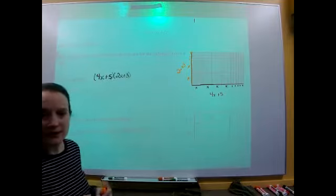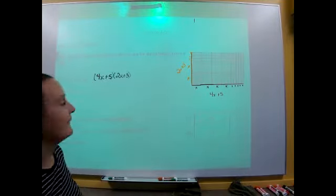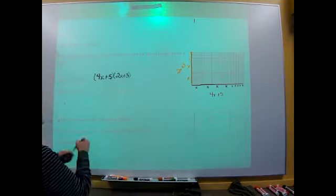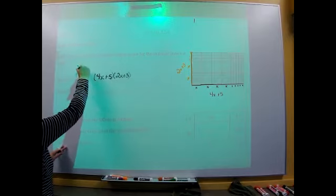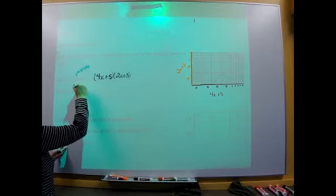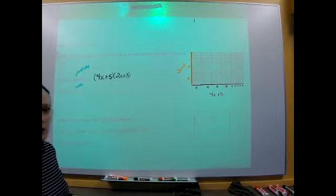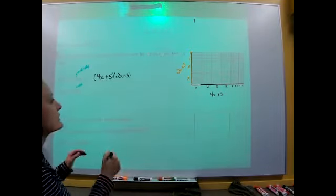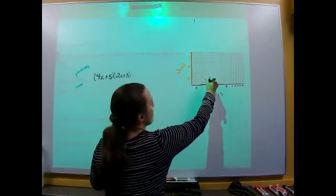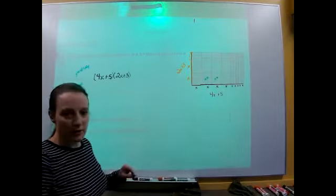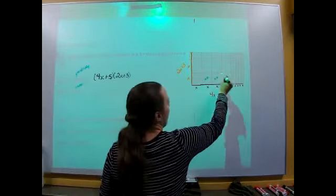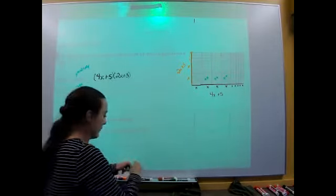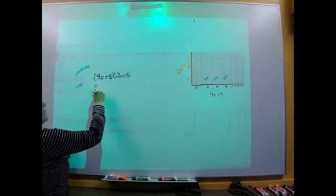I'll answer that later. As a sum — think about what the word sum means. Product means to multiply and sum means to add. So now let's put this in terms of its sum. I have all these little pieces. That's an X squared, that's an X squared. How many X squareds do I have? I have one, two, three, four, five, six, seven, eight. So I have eight X squared.